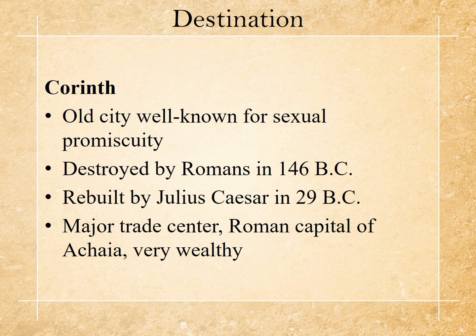Corinth is an old city, known for its immoral promiscuity. A little history: it was destroyed by the Romans in 146 B.C. Julius Caesar rebuilt it in 29 B.C., and it became a major trade center and the Roman capital of Achaia, becoming very wealthy.